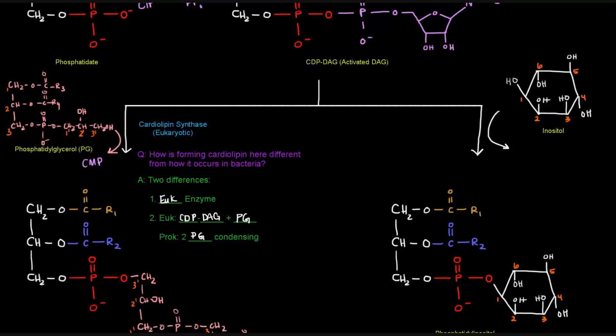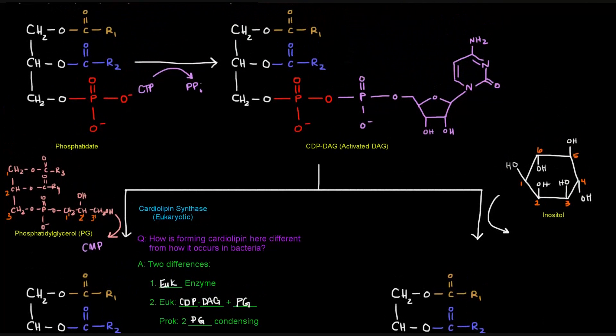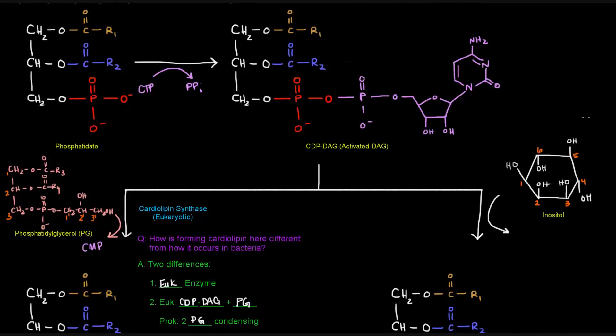Now another way to make another glycerophospholipid is adding this alcohol, inositol. And if we add inositol to replace the CMP here, the CMP will fall off, and the inositol will get added.